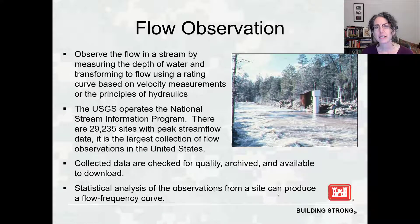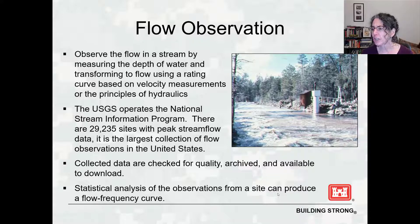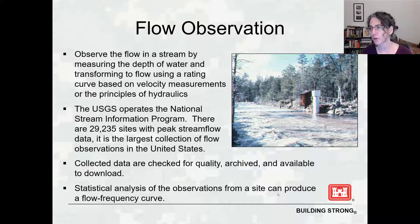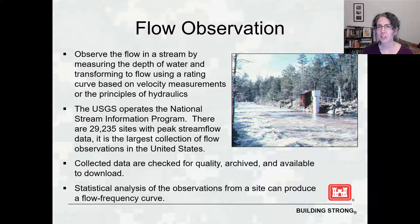Stream flow measurement is done by measuring the stage of flow and then transforming that stage into a flow, generally using a rating curve — a relationship between flow and stage. The gauging agency will, at various different flow levels, go out into the stream, divide it into cross-sectional areas, and measure the velocity in each. For each area, they multiply velocity times area to get flow, then add up those flows across the stream. That gives one flow measurement for one stage, repeated for various stages. At high stages that haven't been observed, hydraulic modeling may help estimate the flow.